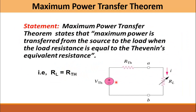The maximum power transfer theorem states that the maximum power is transferred from the source to the load whenever the load resistance is equal to the Thevenin equivalent resistance of the circuit, or the load resistance is equal to the source resistance.